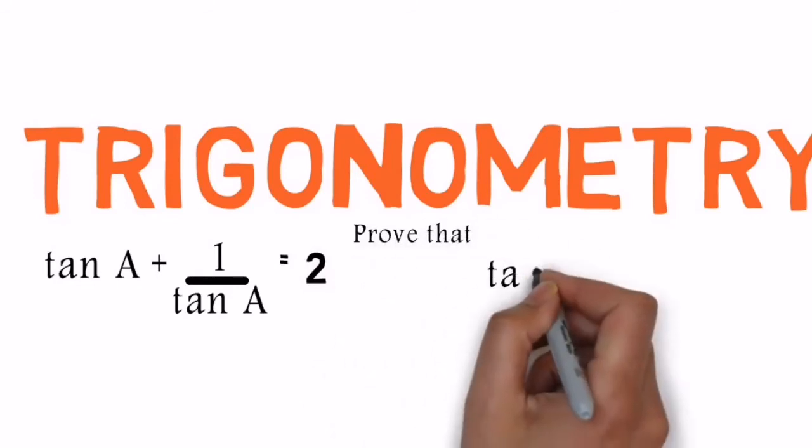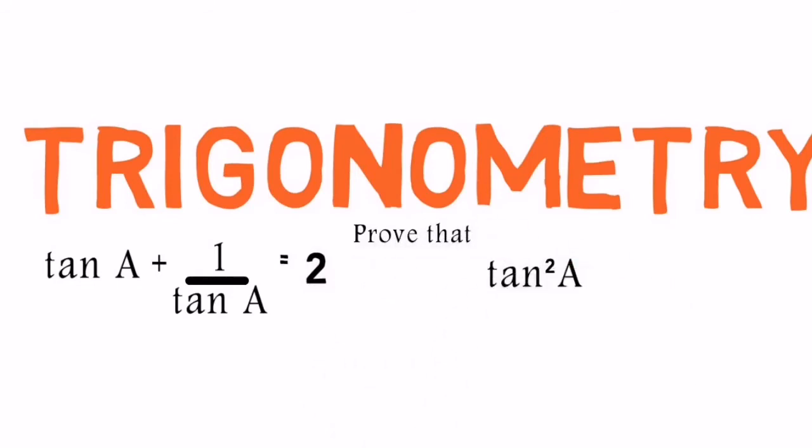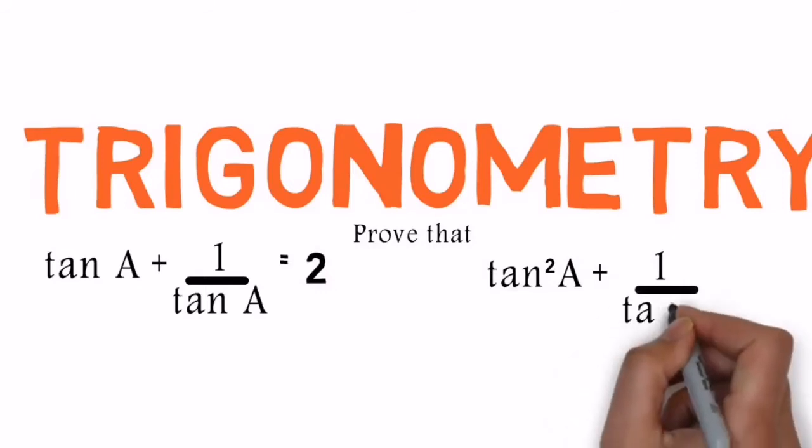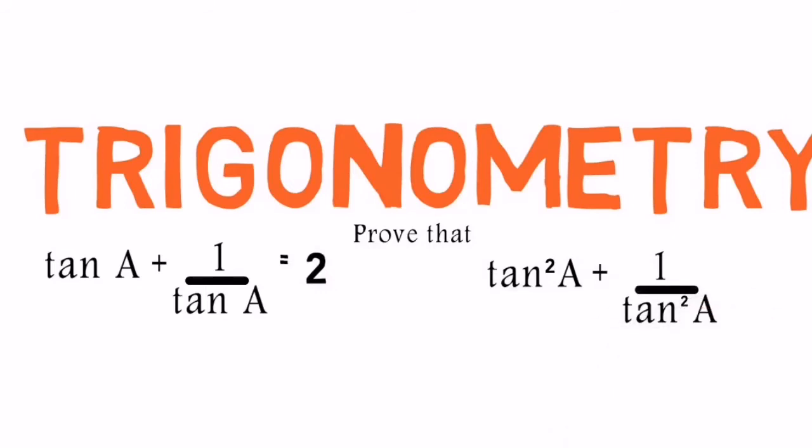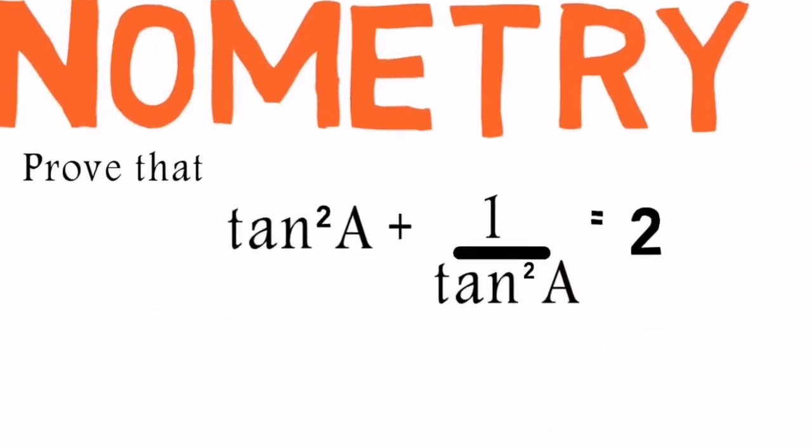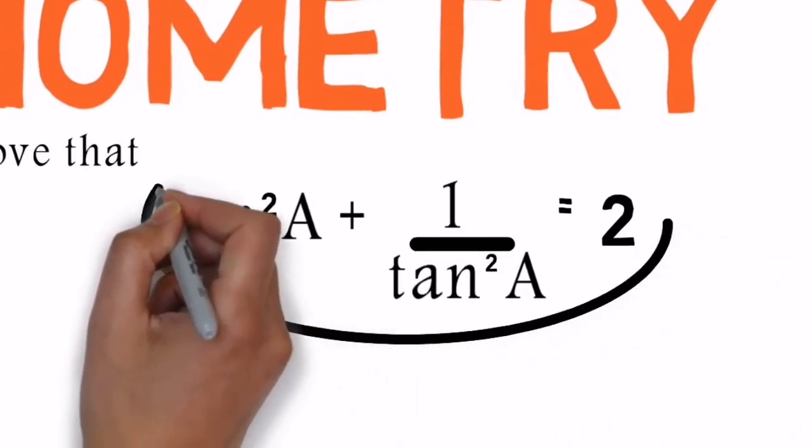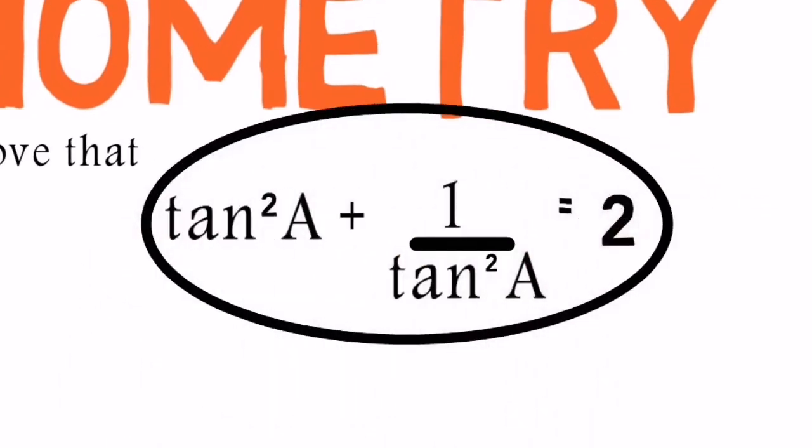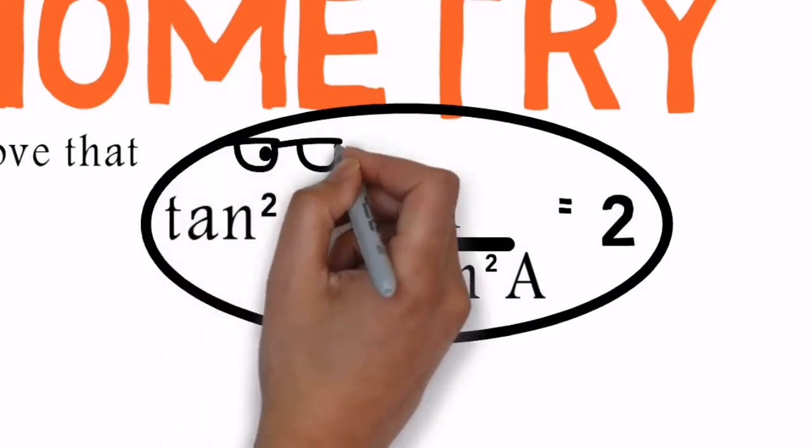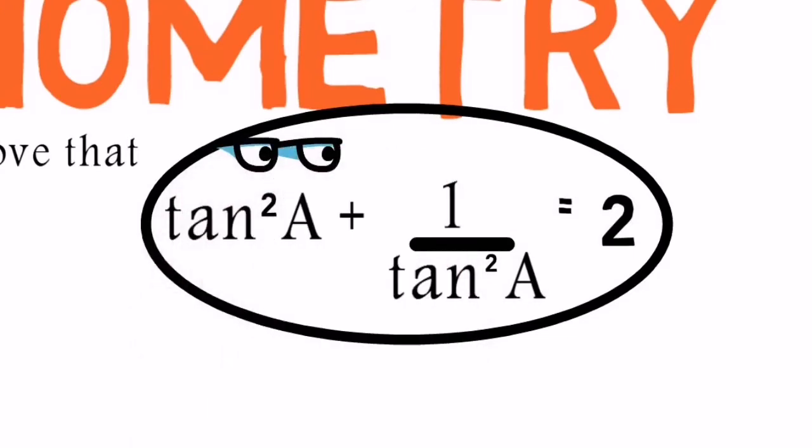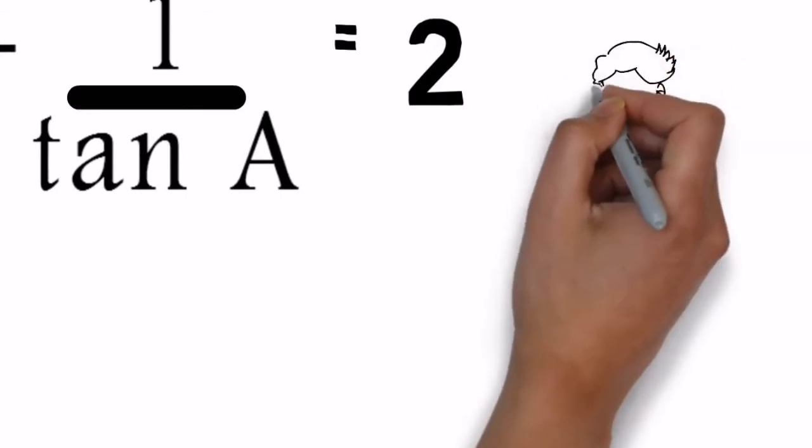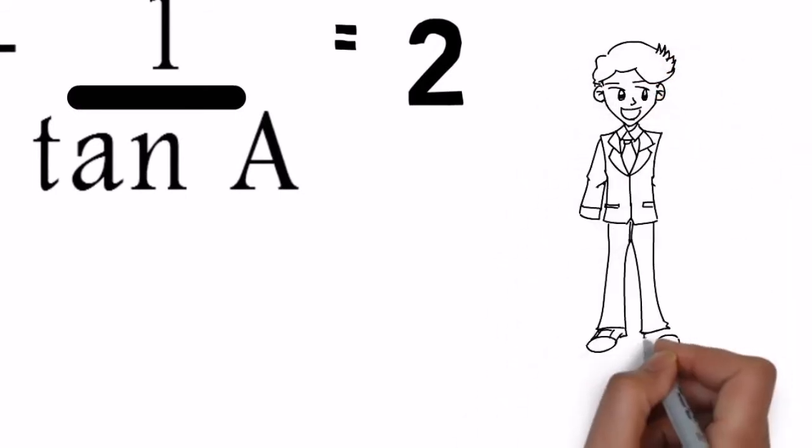This sum has two sections: one is given section and another is to prove that section, as you can see on the screen. Both sections have 2 after the equality, and the first step to understand any sum is to observe very clearly, and that will help enlighten you to make your action plan.